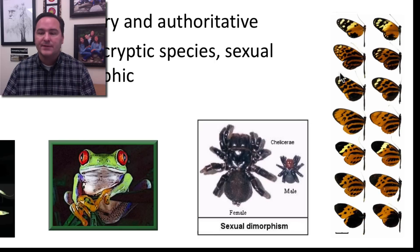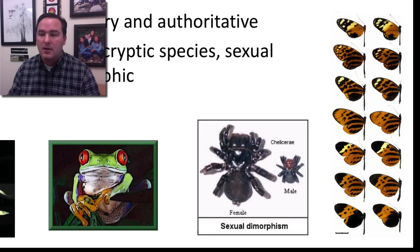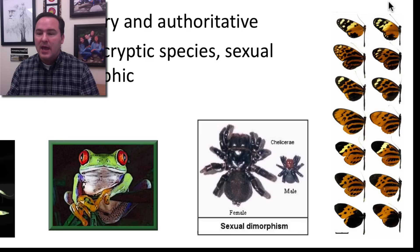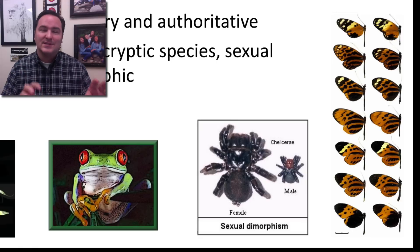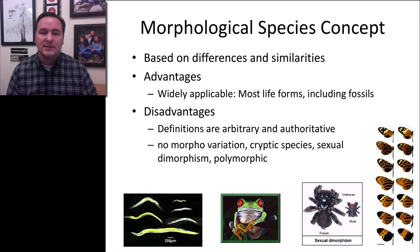There's also the issue of polymorphism, where one species can have many different types. Looking at these butterflies, how many species do you think there are? It turns out there are only two species. The entire left column is one species with seven different morph types, and the right column is a different species that also has seven morph types that mimic those of the first species.